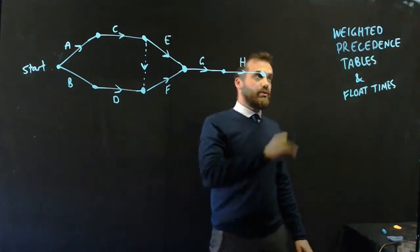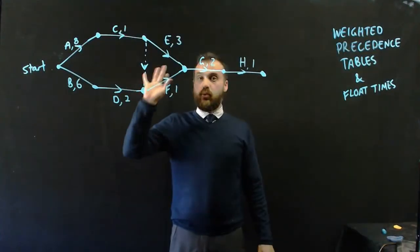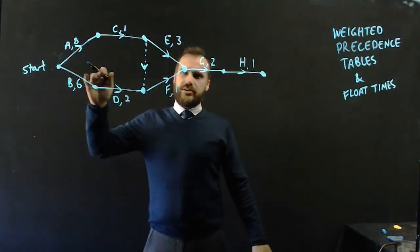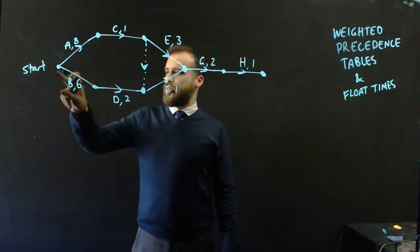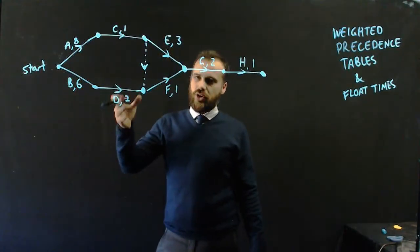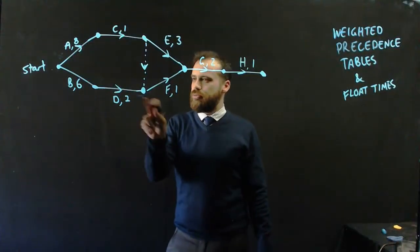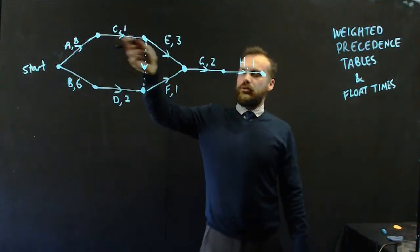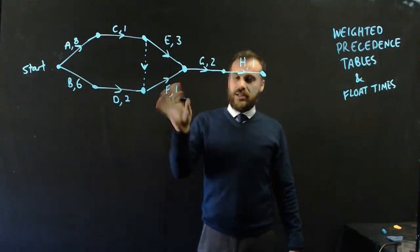Now, I'm going to create what's called a weighted activity network. Now, what does this say? Well, it takes 8 units of time, 8 minutes, 8 hours, whatever it is to do A, but it only takes 6 units of time, 6 minutes, let's go with minutes, to do B. And then it takes 2 minutes to do D, 1 minute to do F, 2 minutes to do G, 3 minutes to do E, and 1 minute to do H. So that's what we mean by a weighted activity network.